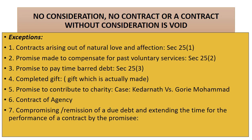Point number three: promise to pay a time-barred debt. A debt or short-term loan becomes time-barred if it is not recovered within three years from the due date. A time-barred debt cannot be recovered from the debtor. But the debtor can make a separate agreement in writing to pay the loan. In this case, the debtor promises to pay the loan but the creditor is not paying anything — even though nothing moves from one party, it is a valid and complete contract.